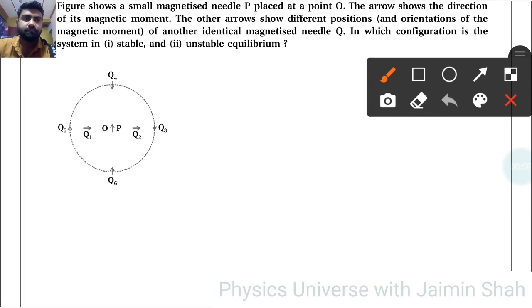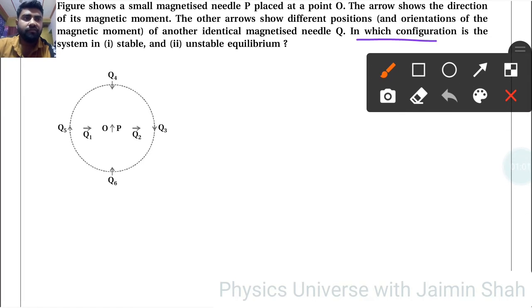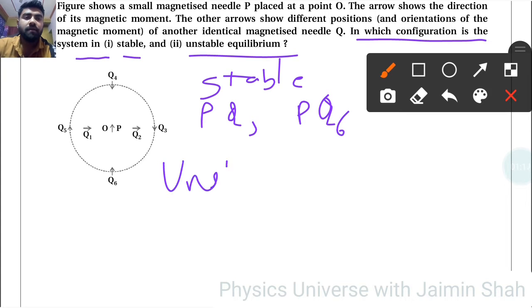Now, second question: which configuration is the system in stable and unstable? So stable are P-Q3 and P-Q6, and unstable are P-Q5 and P-Q4.